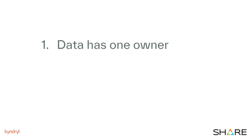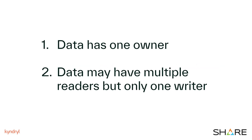The BorrowChecker works by assuming two basic rules. One: data has only one owner. And two: data may have multiple readers, but only one writer. And that's it — those are the two basic rules of the BorrowChecker.